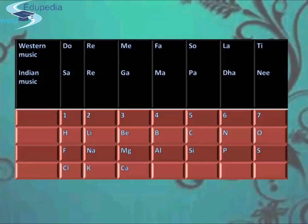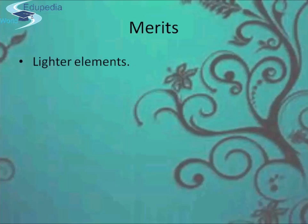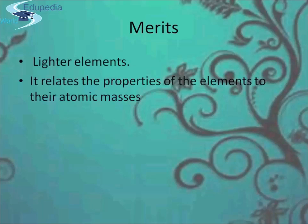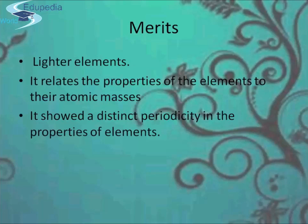Having learned the octave law of classification of elements, let's understand its merits. First, the system worked very well for the lighter elements — for example, lithium, sodium, and potassium were brought together. Second, it related the properties of elements to their atomic masses. Third, for the first time it was shown that there is a distinct periodicity in the properties of elements with respect to the increasing order of atomic masses.